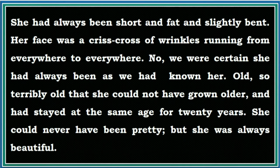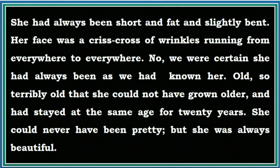'She had always been short and fat and slightly bent. Her face was a crisscross of wrinkles running from everywhere to everywhere.' The author is describing her physical appearance: she was short, fat, slightly bent, and her face was a crisscross of wrinkles — meaning many lines intersecting on her face. They were certain she had always been as they had known her. She was so terribly old that she could not have grown older and had stayed at the same age for 20 years.